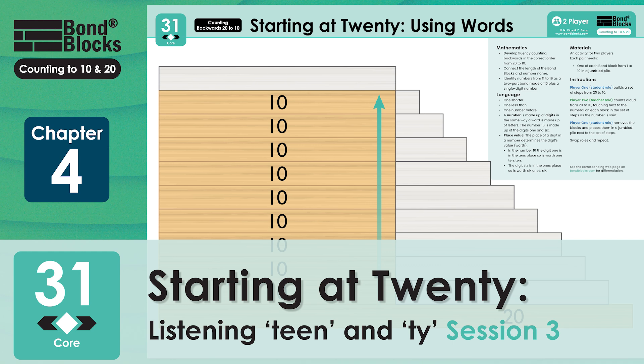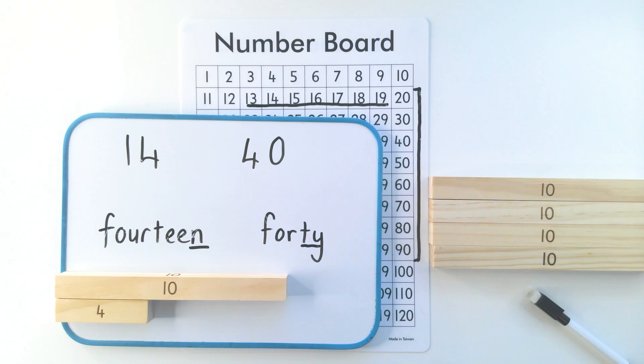Welcome to activity 31, session 3. We're going to be counting backwards from 20 to 10, but first I have my friend Felicity with me.